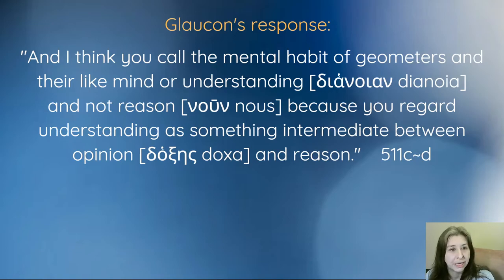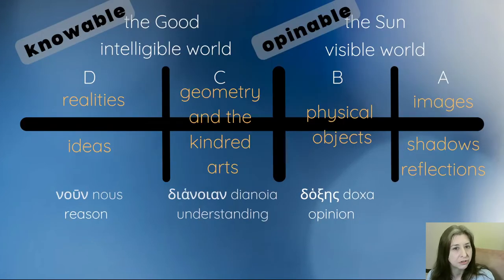Here's his third point. He says, I think you call the mental habit of geometers and their like mind or understanding. In the Greek here is dianoia, and not reason—and here it's nous again—because you regard understanding as something intermediate between opinion and reason, or between doxa and nous in the Greek. So he is filling in certain cognitive functions here for each of these sections. He's calling section B doxa or opinion. He's calling section C dianoia or understanding, and he's calling section D nous or reason. I'm sticking with the translations of Paul Shorey.